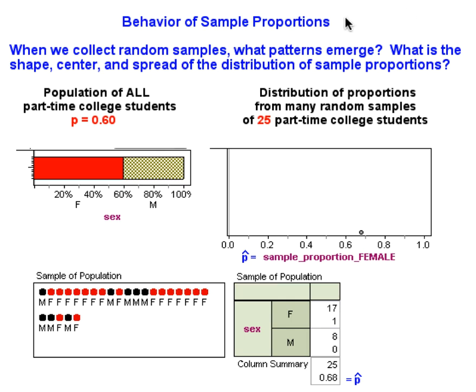In this movie, we're going to discuss the behavior of sample proportions by investigating these two questions. When we collect random samples, what patterns emerge? More specifically, what is the shape, center, and spread of the distribution of sample proportions?